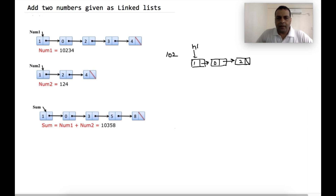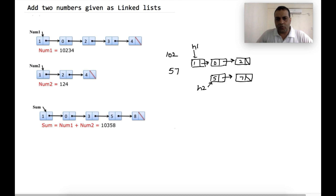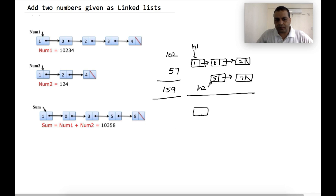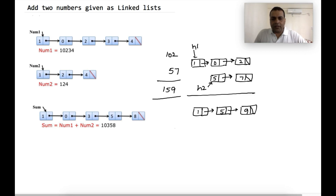We are given a pointer h1 pointing to the head of this list. Another number to be added is 57, given as a linked list where the first node is 5 and the second node is 7, with h2 pointing to its head. We are supposed to add the two numbers: 102 plus 57 is 159. The answer should be a linked list representing 159, and we return a pointer to the head of the result list.